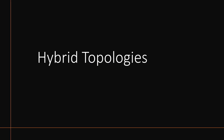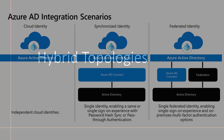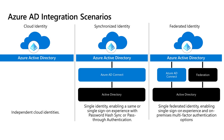Now that you know the why, let's get into the how. There are really three different integration scenarios for Azure Active Directory: pure cloud identity, which is unlikely in most scenarios; synchronized identity; and federated identity. Both synchronized and federated use Azure Active Directory Connect to synchronize Windows Server on-premises Active Directory with Azure Active Directory. Federated identity also uses Active Directory Federation Services, or ADFS.